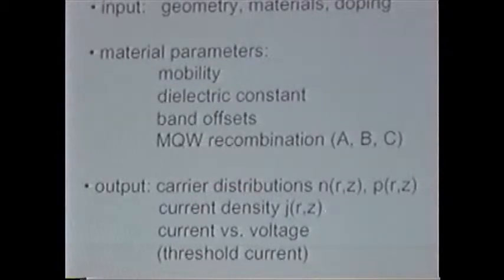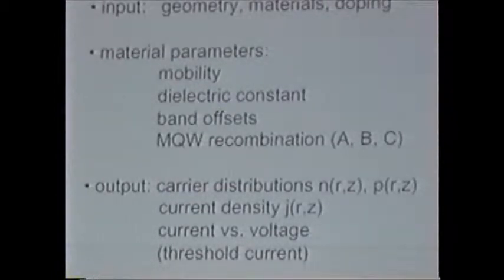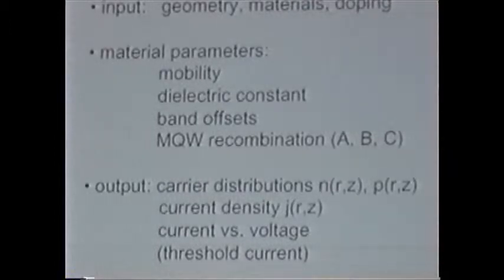From the drift-diffusion model, you get the carrier distribution, current density, current-voltage curves, and basic electrical parameters.